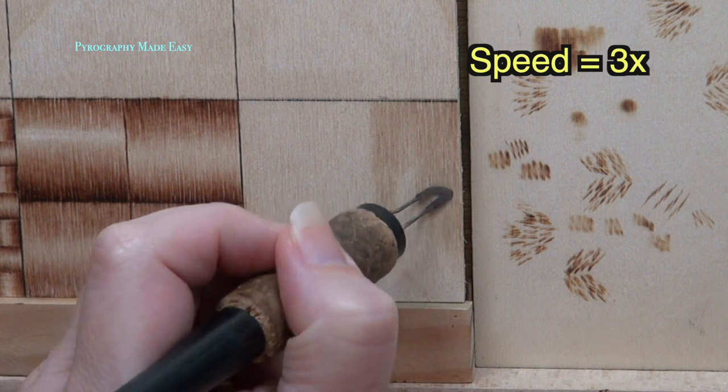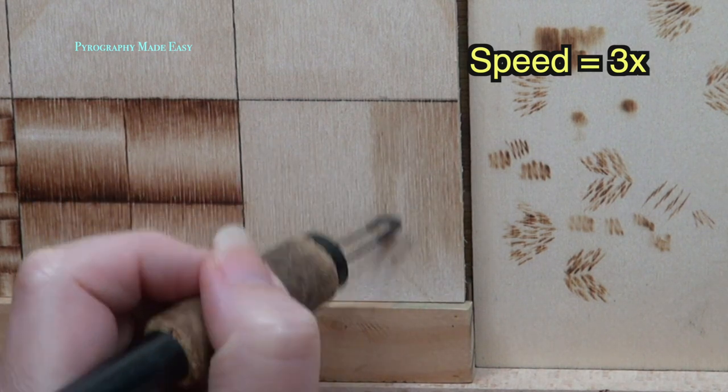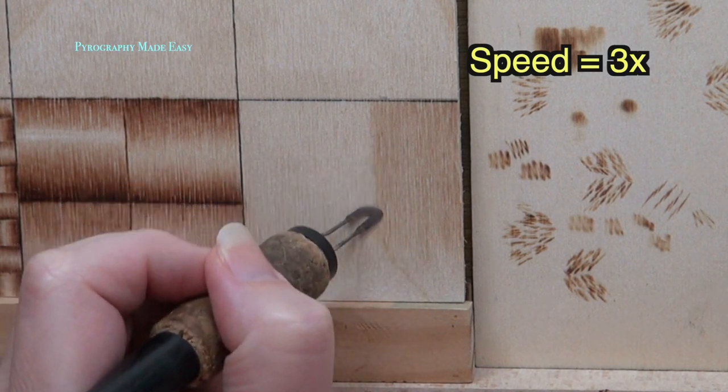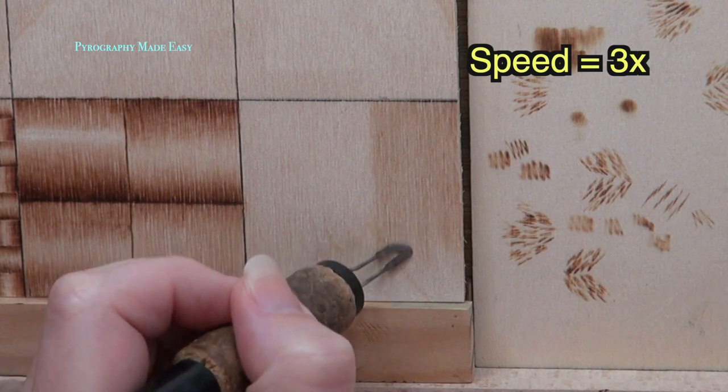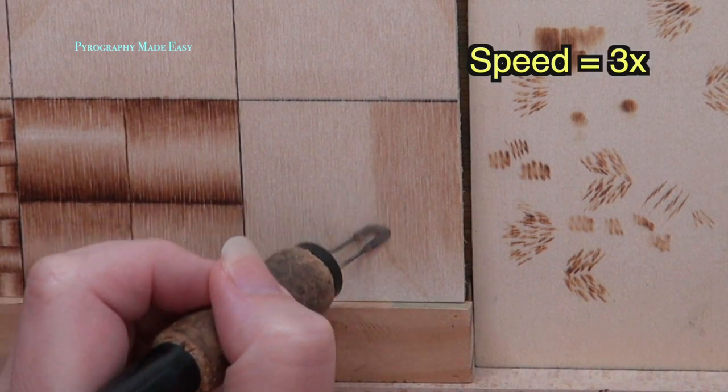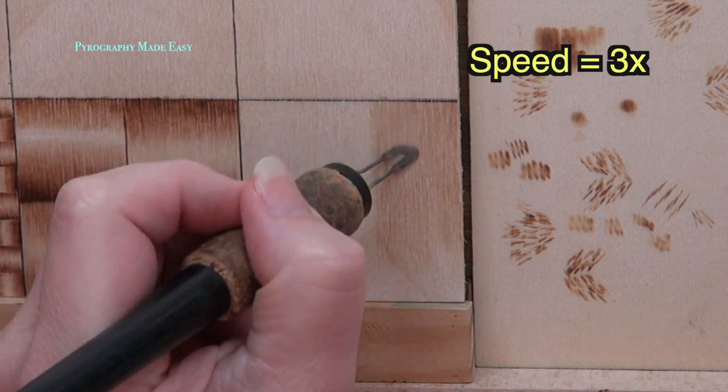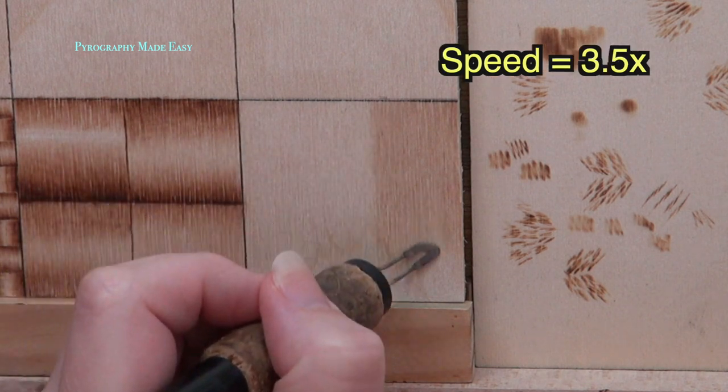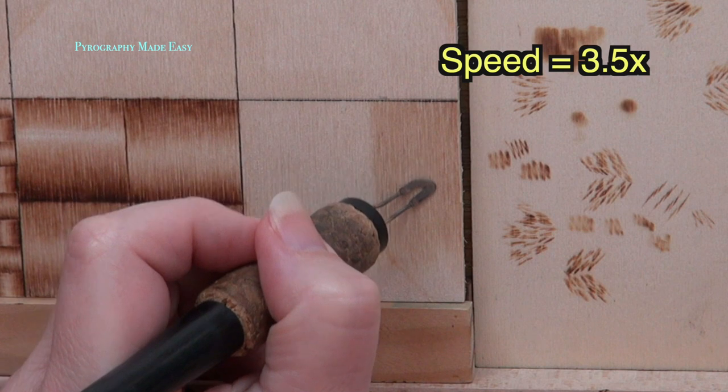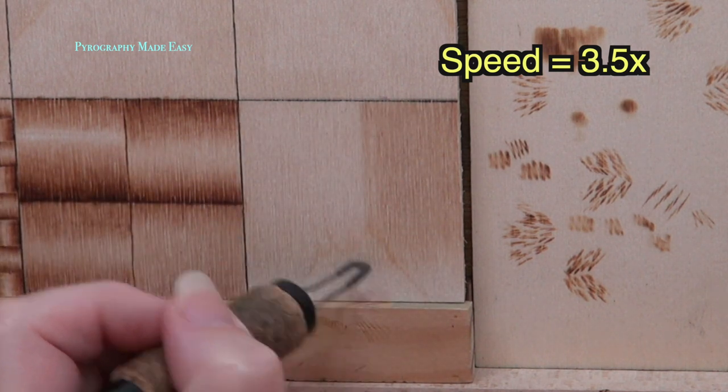As I burn, I vary the length of the burn strokes. This prevents a horizontal line from forming. When I extend the color, I begin a stroke a short distance from the end of an existing burn stroke. I do not pause or hesitate in any way when I start burning. Any sort of pause or hesitation would create a small patch of darker color. So it is very important you keep your pen tip moving at all times.